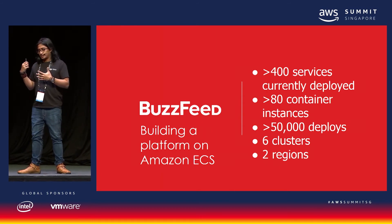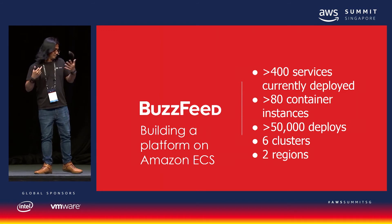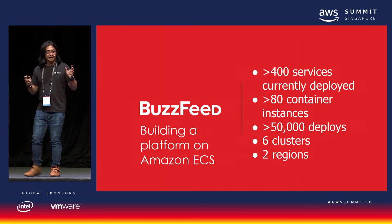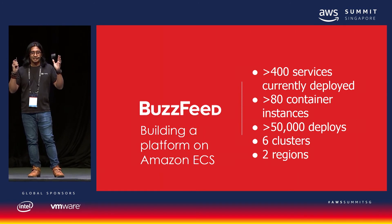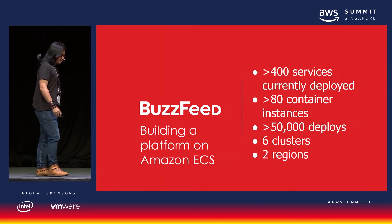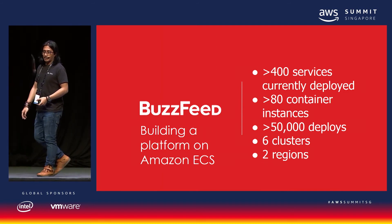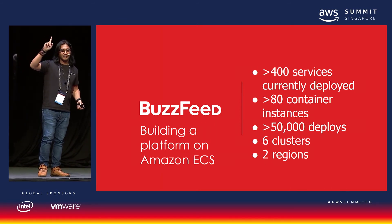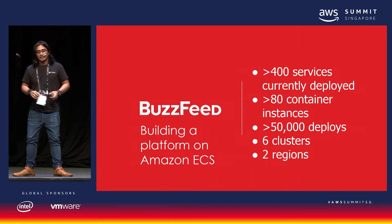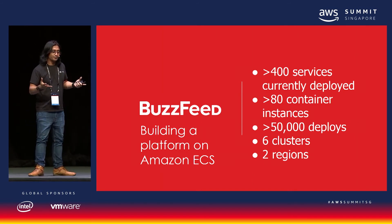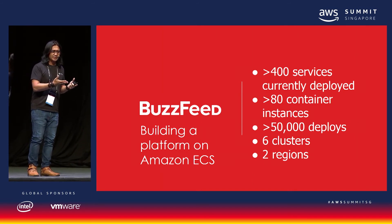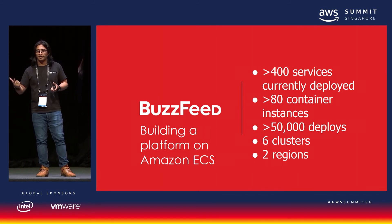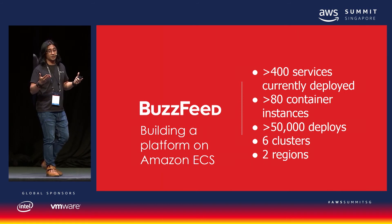We've seen the benefits of Amazon ECS, EKS, and Fargate. Going back to microservices — when doing this at scale, like what BuzzFeed has done, it can get really painful. How many of you have successfully deployed microservices in a single operation? The problem with microservices at scale is figuring out how to autoscale, how to do service discovery, and how to coordinate microservices.